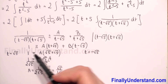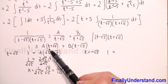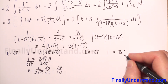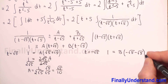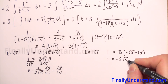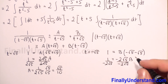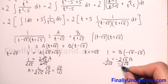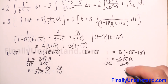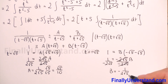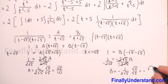Now I substitute t equals negative square root of 5. The first expression reduces to 0 and we have B times (negative square root of 5 minus square root of 5). So 1 equals negative 2 square root of 5 times B. Dividing both sides by negative 2 square root of 5 gives b equals negative 1 over 2 square root of 5. Multiplying numerator and denominator by square root of 5, we get B equals negative square root of 5 over 10.